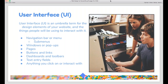One term you'll hear a lot is UI, which means user interface. User interface is basically all the stuff that people who visit your website use to interact with it — it's the structure of the site. Your UI includes your navigation bar or menu, which is how you'll move around the site — sometimes shortened to nav bar — any sub-menus, windows or pop-ups, buttons and links, a dashboard or toolbar, and text entry fields. Basically, anything a user would utilize to interact with your site is considered UI.